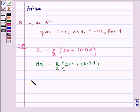Which implies, this two goes here. So we get 384 is equal to 8 multiplied by 6 plus 7d.